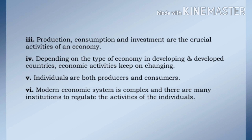The fifth feature is: individuals are both producers and consumers. The sixth feature is: modern economic system is complex and there are many institutions to regulate the activities of individuals. Thus, we have institutions like RBI, SEBI, World Bank, IMF, WTO, SAARC, ADB and many more that govern the activities of individuals as well as countries.